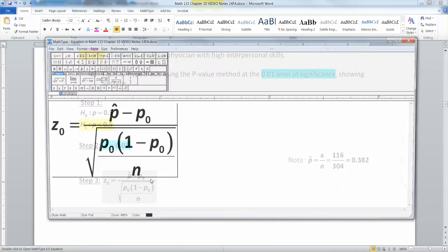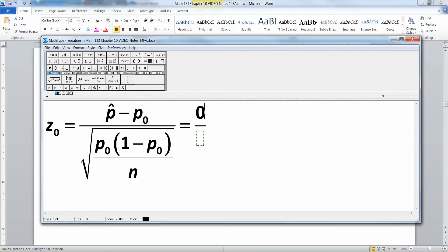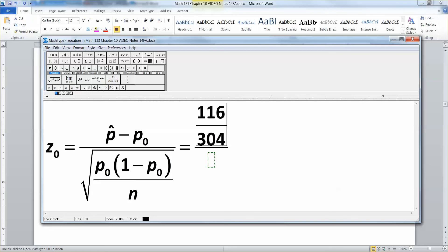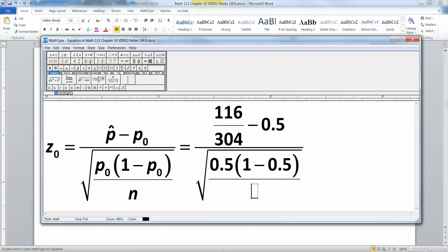Okay, so then, when I go here, this formula, that's 0.382 in the front. Or, if you'd like, you can just say 116 over 304. That'll work. And then P0 was 0.5. Then, 0.5, 1 minus 0.5, over N, which was 304. Like that.